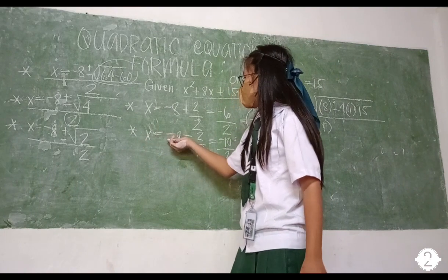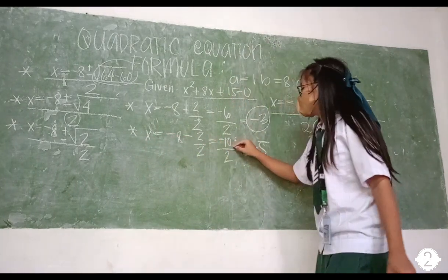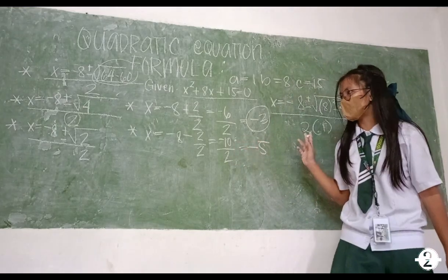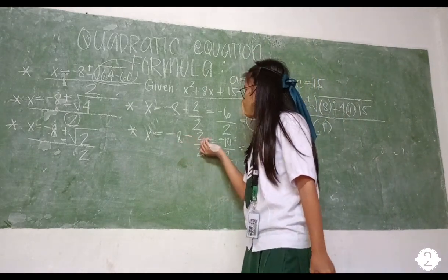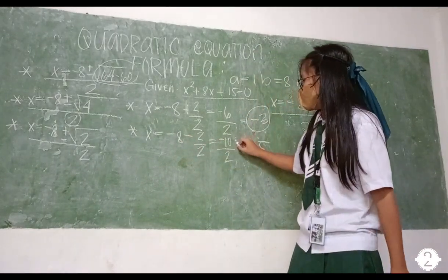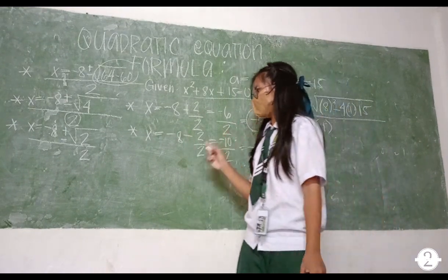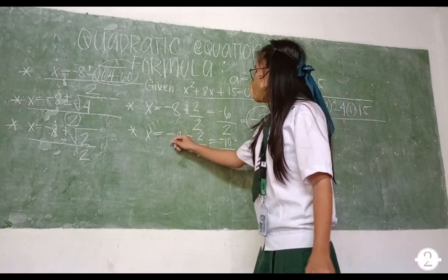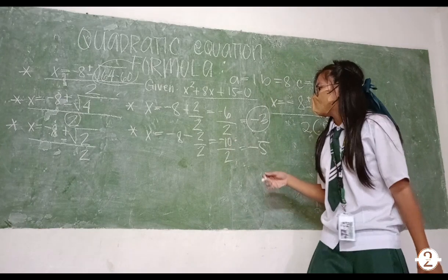So x equals negative 8 minus 2 over 2 equals negative 10 over 2, then equals negative 5. So paano natin nakuha yung negative 5? Negative 8 minus 2 over 2 is equals negative 10 over 2. So kapag naman negative at positive ang pinag-minus mo, magiging addition naman siya. Negative 8 plus 2 is equals negative 10.